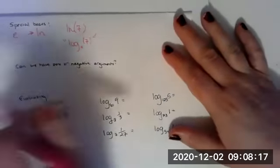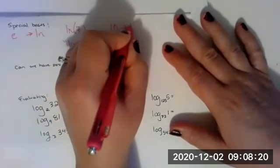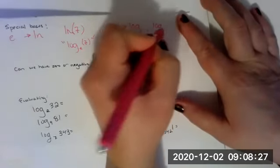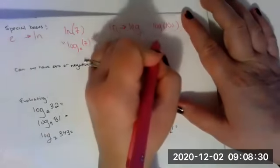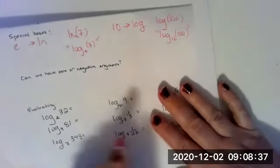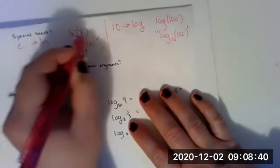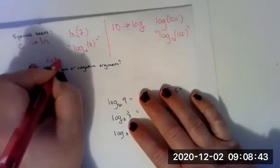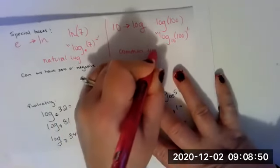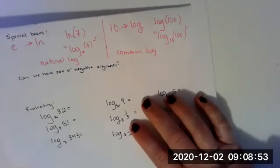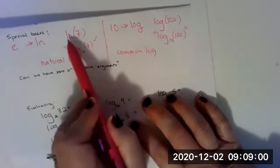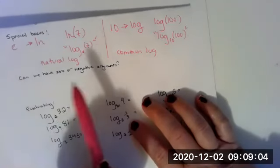Another special base is 10, which will just say log, it won't really say a base. So if you see, say log of 100, what that means is log base 10 of 100. So this is called the natural logarithm, we say natural log or natural logarithm. And then base 10, we say common log or common logarithm. So if you see log with no base, it's base 10. If you see natural log or ln, it's base E.